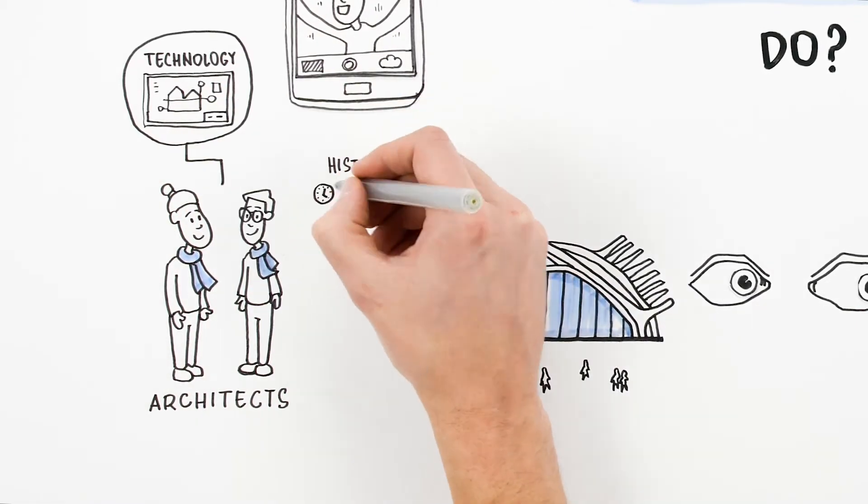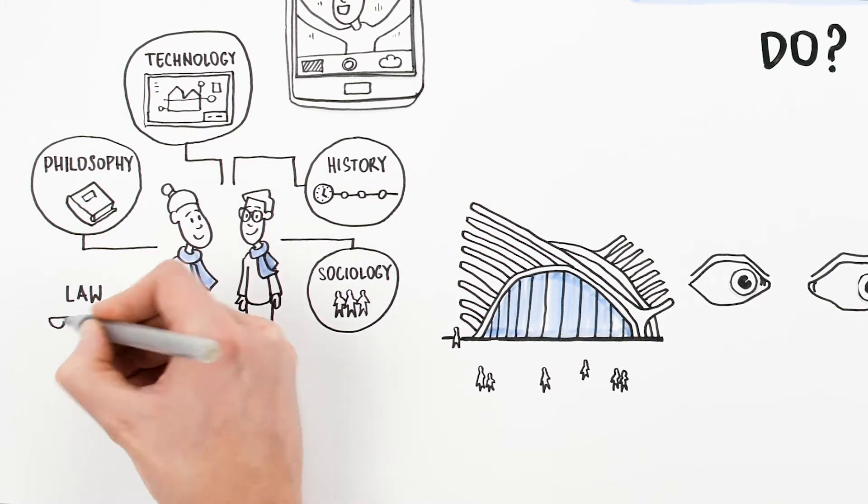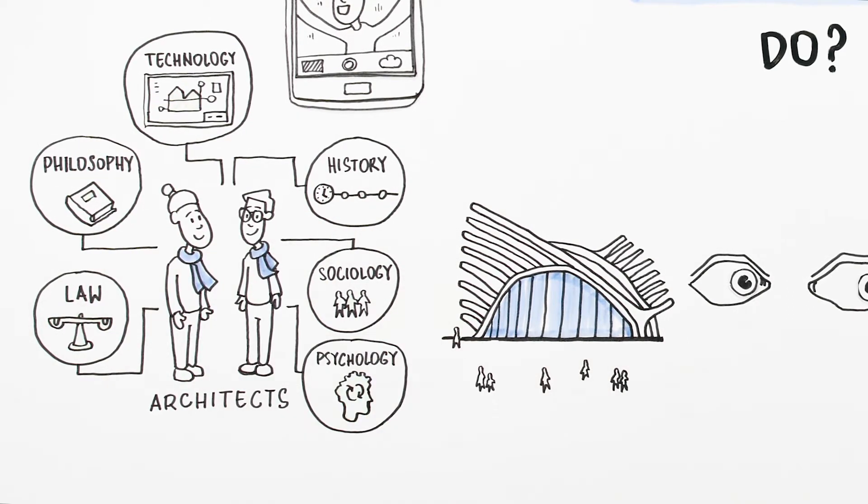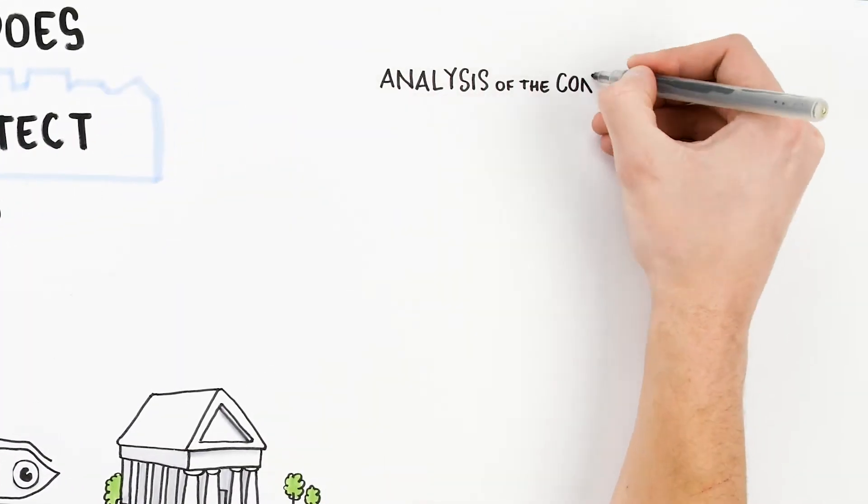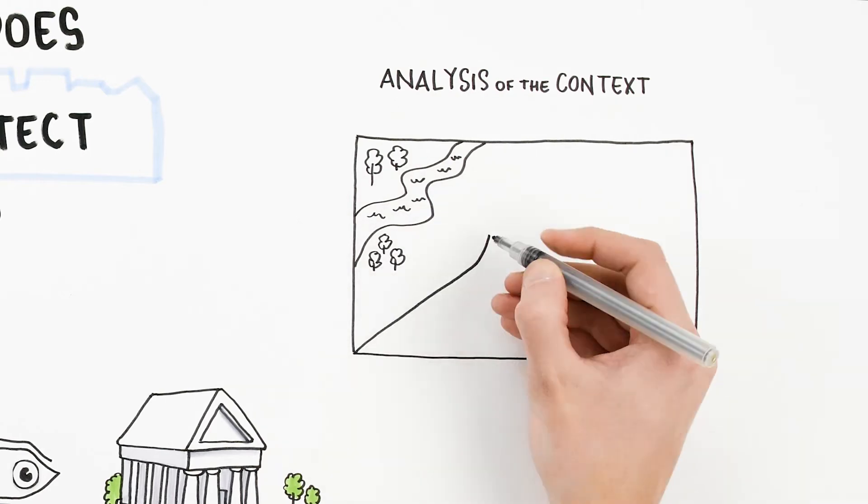Architecture is an art based on knowledge of technology, history, sociology, philosophy, law and even psychology. Before creating a new building, every architect must perform the analysis of the context and become familiar with the environment.